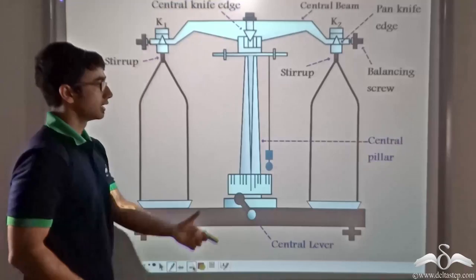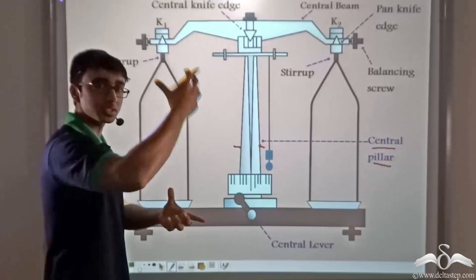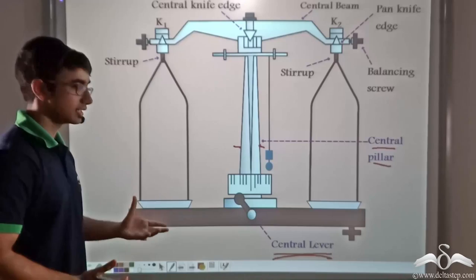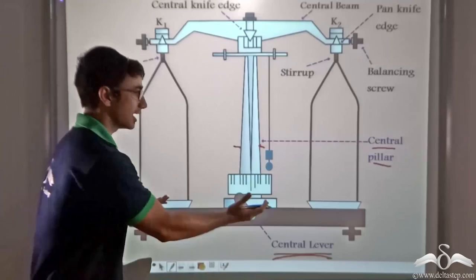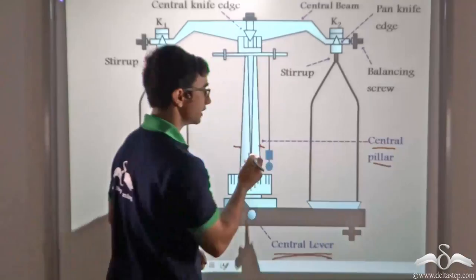This part is known as the central pillar, which is a hollow pillar fitted over a rod. With the help of the central lever, this central pillar can be lifted up and down. So when we need to measure the mass of an object, we simply raise the central lever so the two pans on either side are raised upwards. This is possible because the central pillar is hollow and fitted over a particular rod.